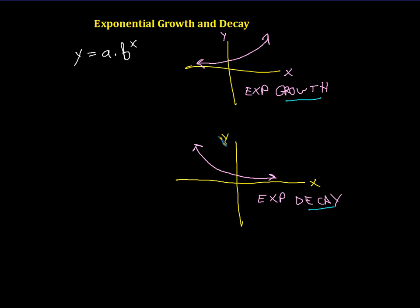So how could this one function produce a graph that has growth and a graph that has decay? Well, it turns out this is the secret. The secret is that here, b is always going to be greater than 1 for exponential growth. And down here, b is always going to be some number between 0 and 1.